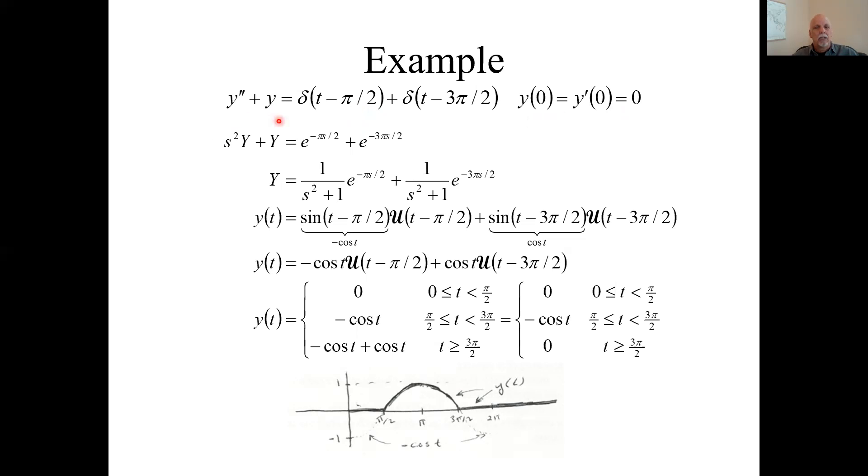So we find the subsidiary equation. S squared minus all the initial conditions, so it's just S squared Y plus Y. And here we just found the Laplace transform of unit impulses. So this will be E to the minus pi S over 2, this is E to the minus 3 pi over 2 S. Divide by S squared plus 1 on both sides. Here's the Laplace transform of the solution.